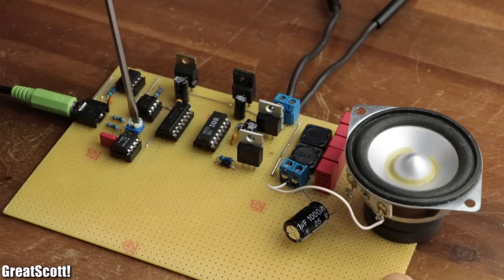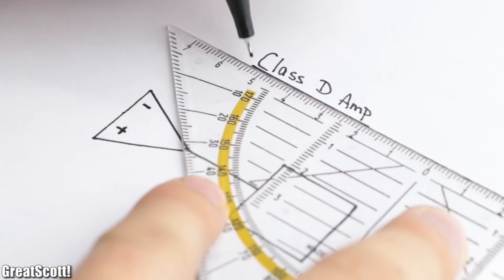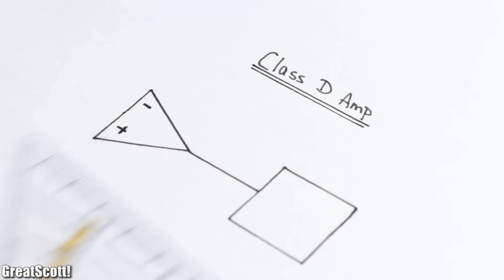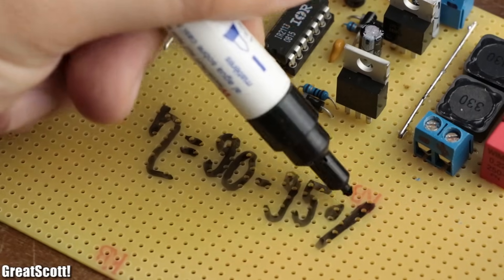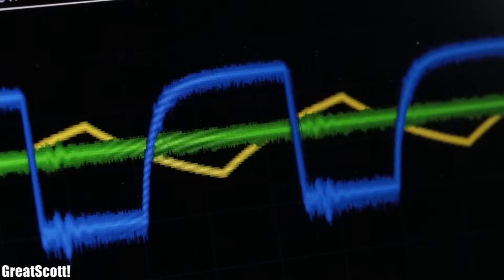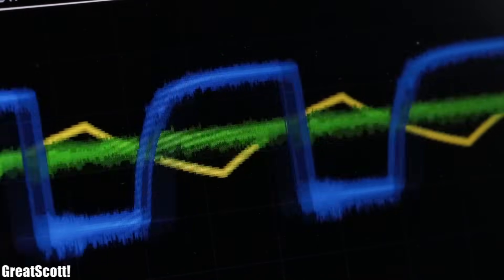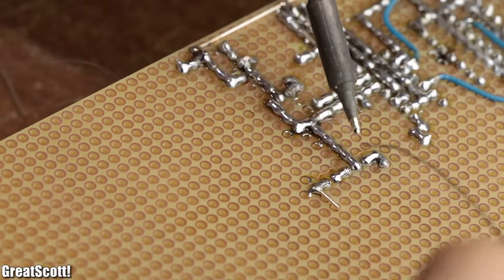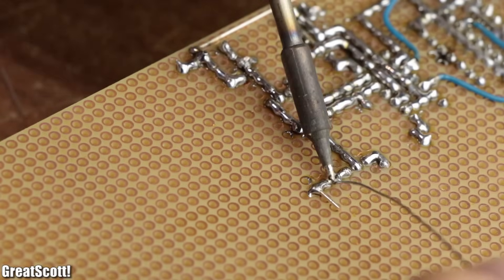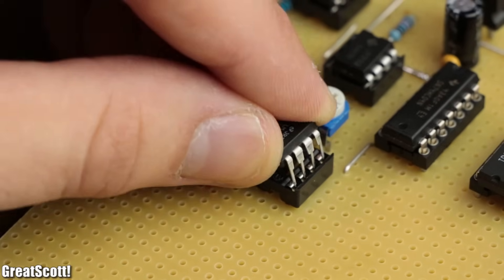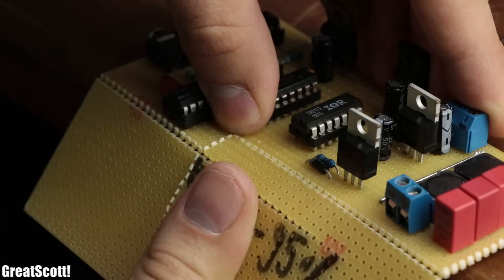To increase this efficiency though, we can utilize another audio amp kind, a class D amp to be precise with an efficiency of up to 95 percent. So in this video, I will show you how such an audio amp works and how we can create our own DIY version which consists of common components. Let's get started!